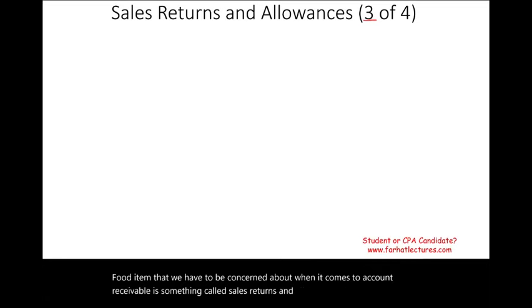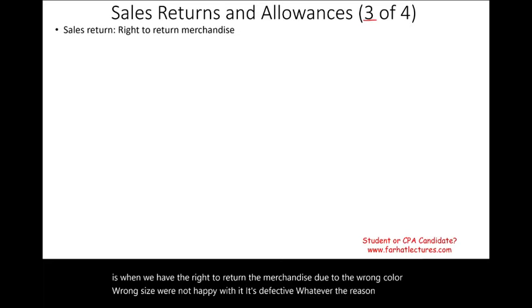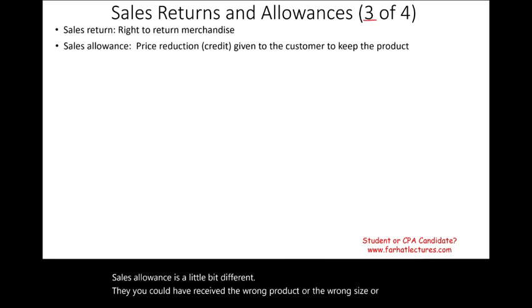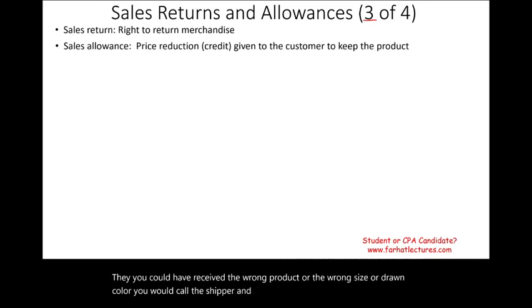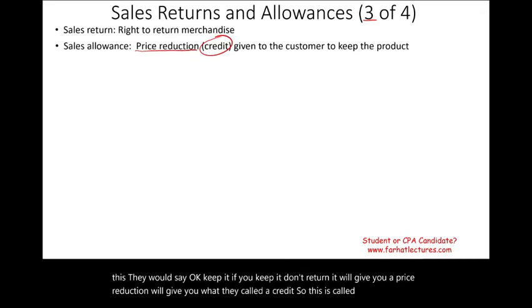The third item is sales returns and allowances. Sales return is when a customer returns merchandise due to wrong color, wrong size, or defect. Sales allowance is different: the customer received the wrong product, calls the seller, and instead of returning it, the seller gives a price reduction — a credit — reducing the customer's account receivable or bill.